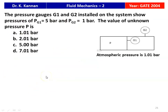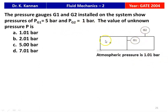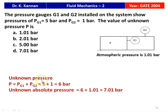The next question from the 2004 Gate Question Paper: 'Gauges G1 and G2 installed on the system show P_G1 = 5 bar and P_G2 = 1 bar. Atmospheric pressure = 1.01 bar. Find the unknown pressure P.' The gauge pressure = P_G1 + P_G2 = 5 + 1 = 6 bar. The absolute pressure = 6 + 1.01 = 7.01 bar. The answer is 7.01 bar.